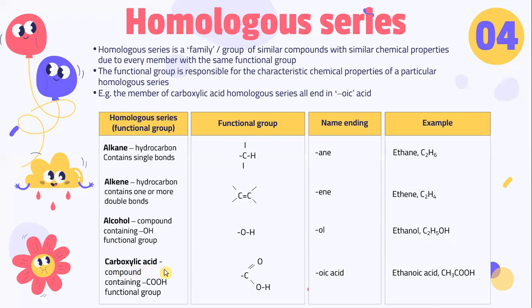Finally, we have carboxylic acid, where the compound contains COOH as the functional group. The name ending for carboxylic acid is -oic acid. For example, ethanoic acid. So alcohol ends with -ol, as in ethanol, and carboxylic acid ends with -oic acid.